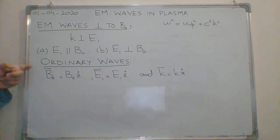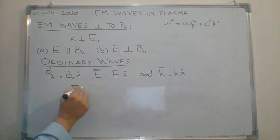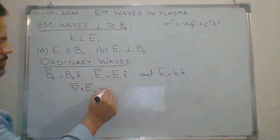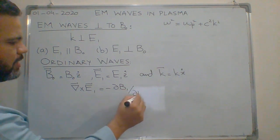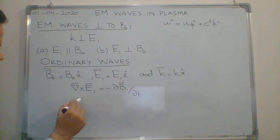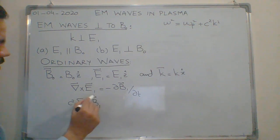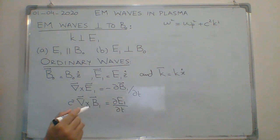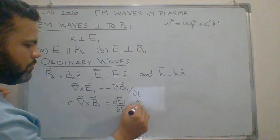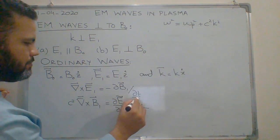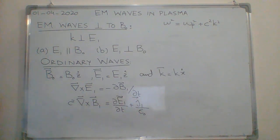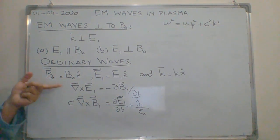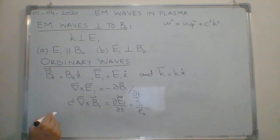The Maxwell's equations required for this case are the same as before: del cross E1 equals minus partial B1 by partial t, and del cross B1 equals partial E1 by partial t plus J1 over epsilon-0. By following the same procedure already discussed for electromagnetic waves in plasma, we can solve these equations to find the dispersion expression.